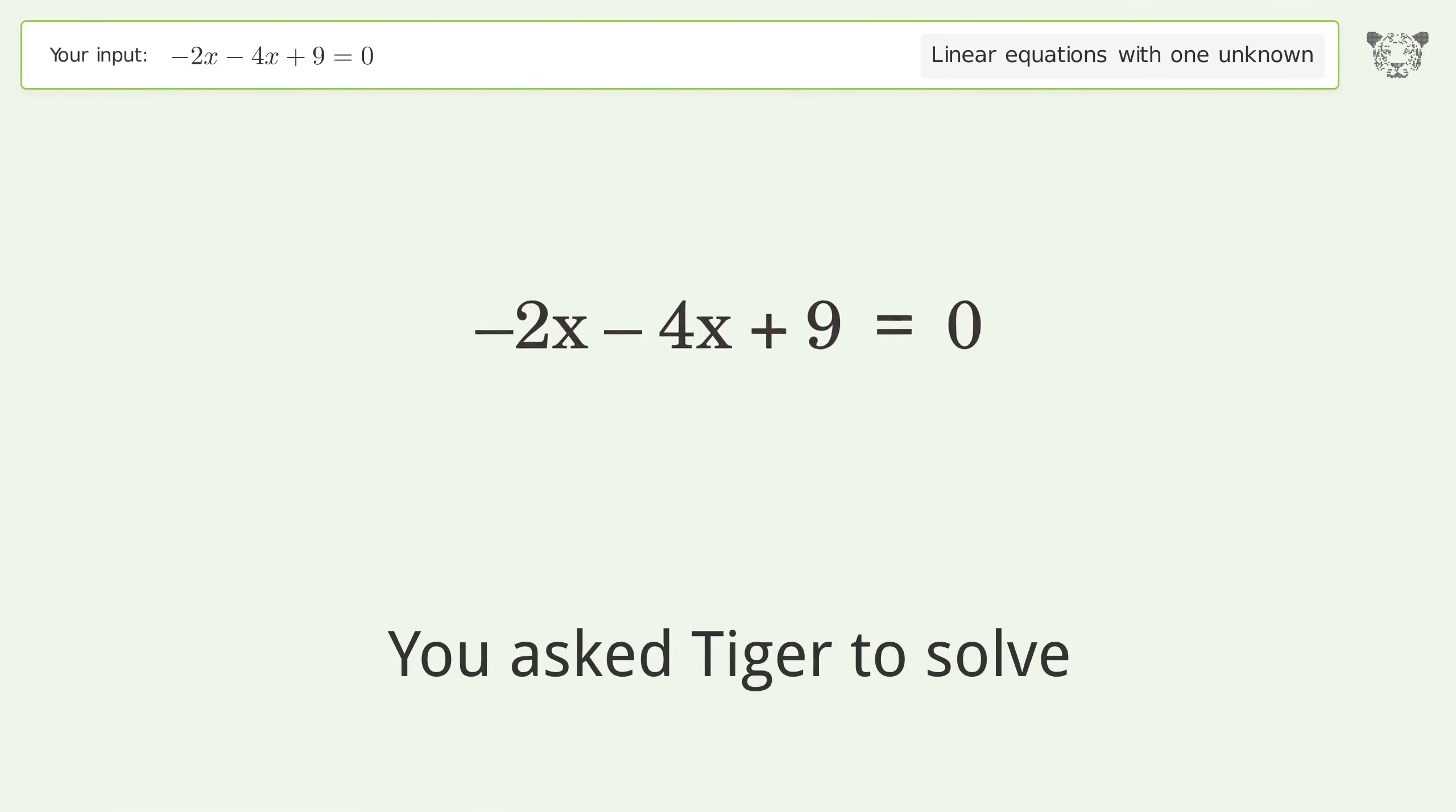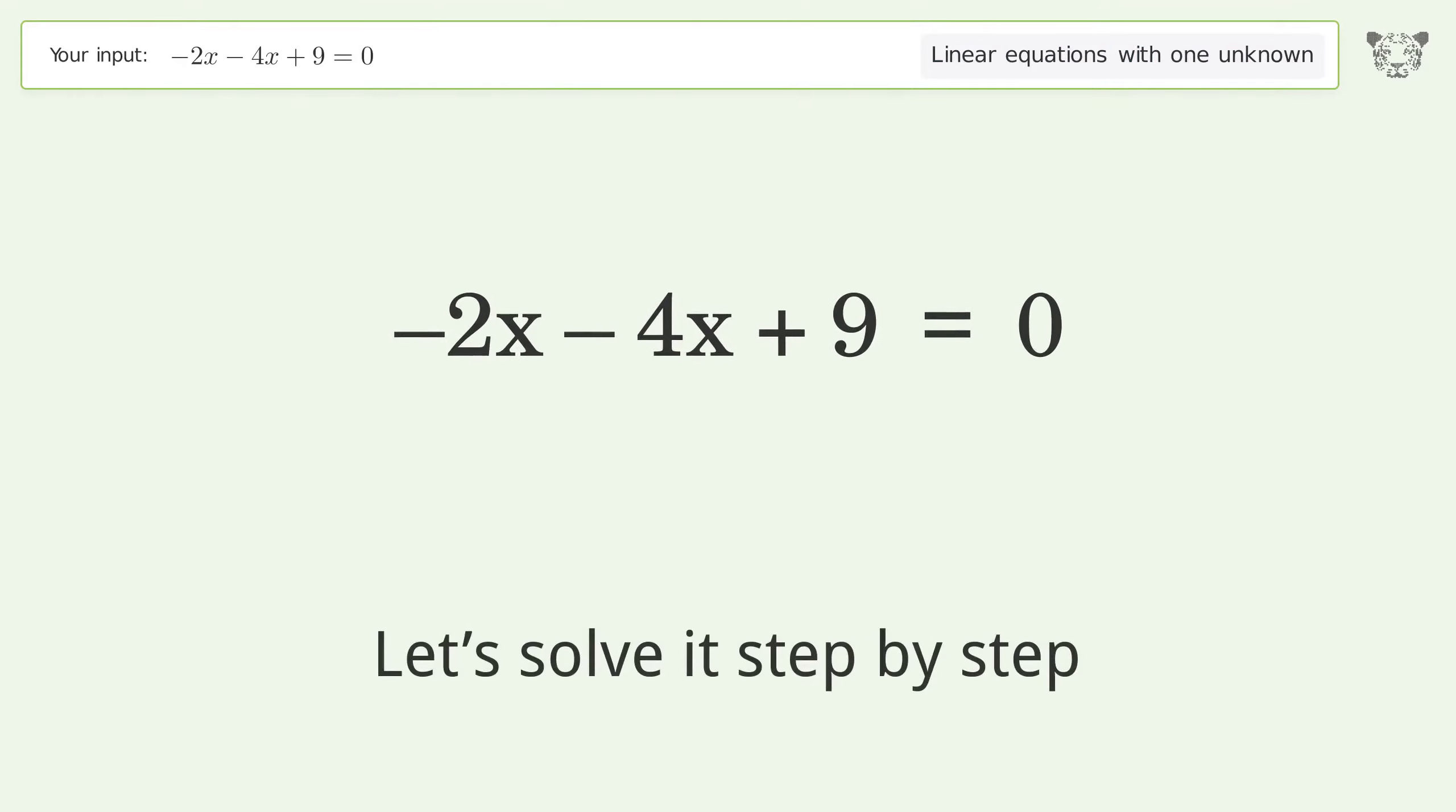You ask Tiger to solve this. This deals with linear equations with one unknown. The final result is x equals 3 over 2. Let's solve it step by step. Simplify the expression, simplify the arithmetic.